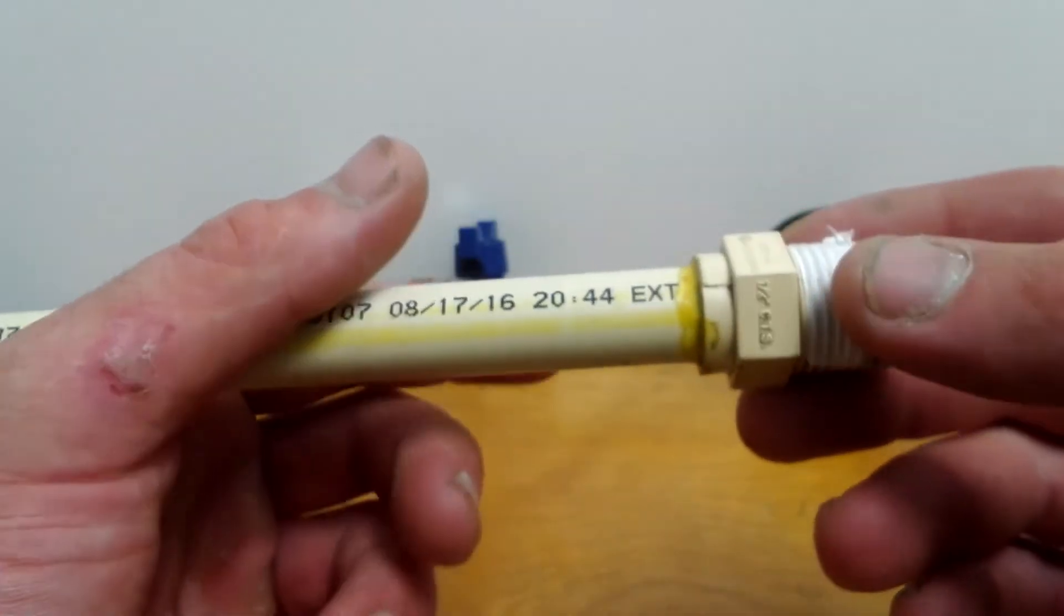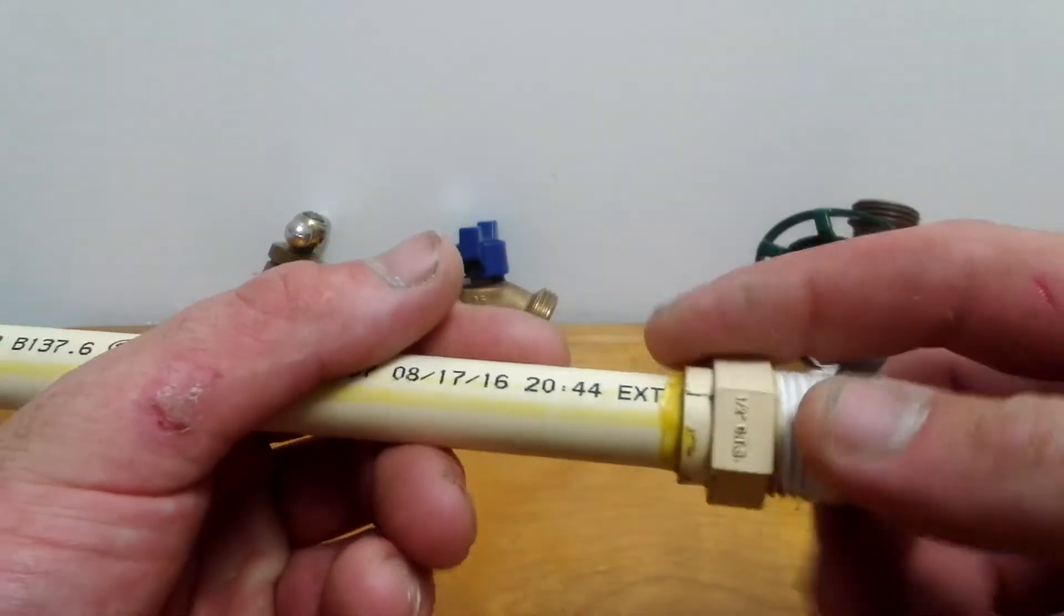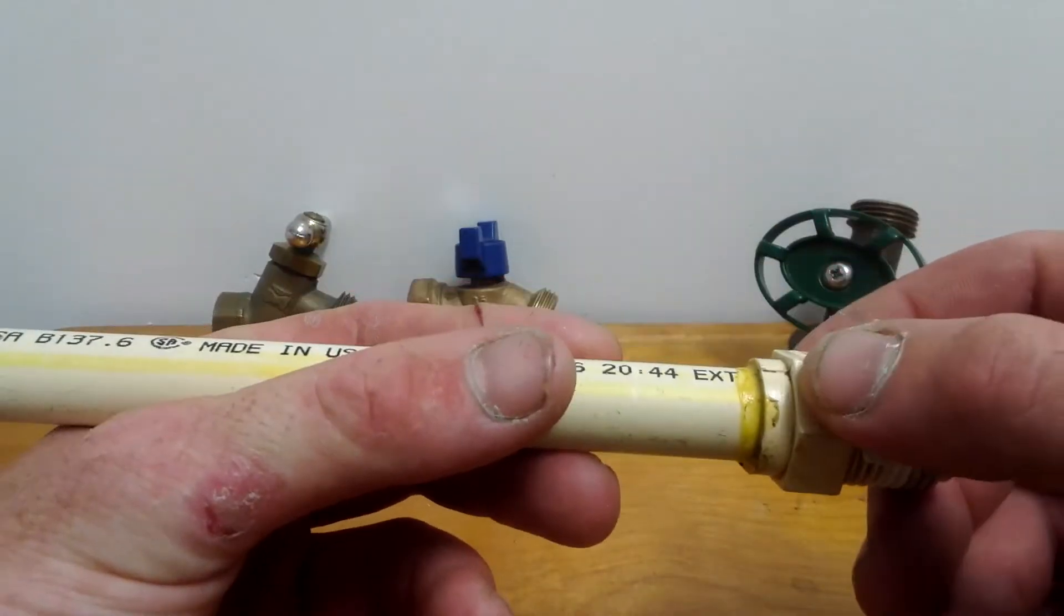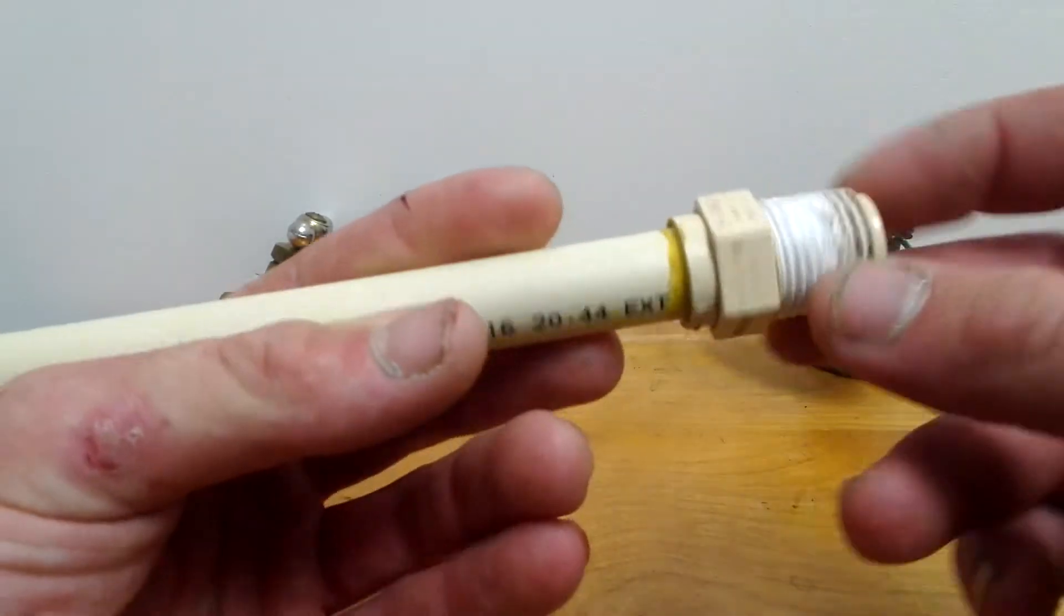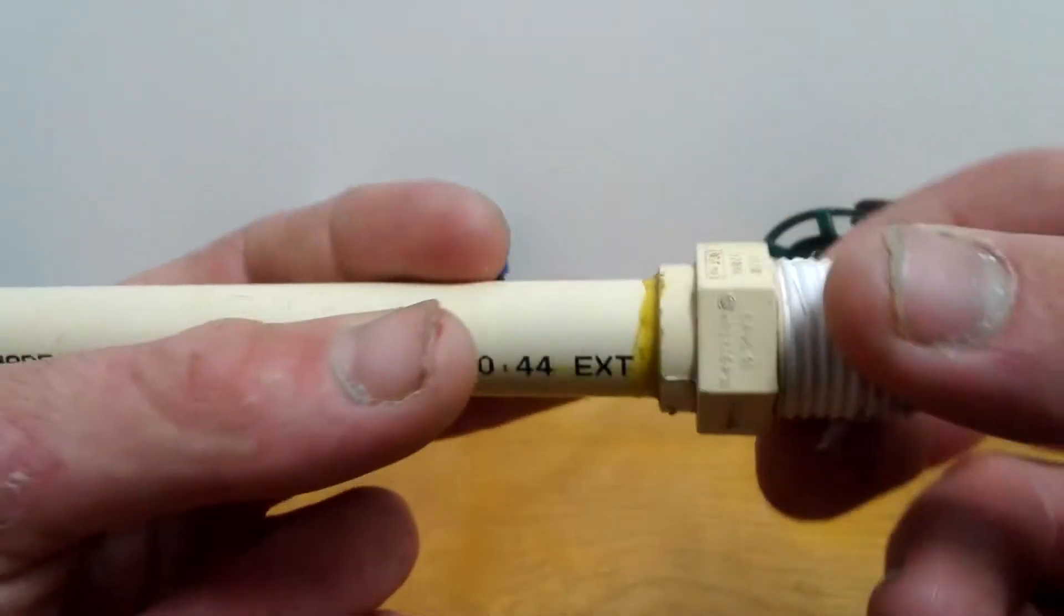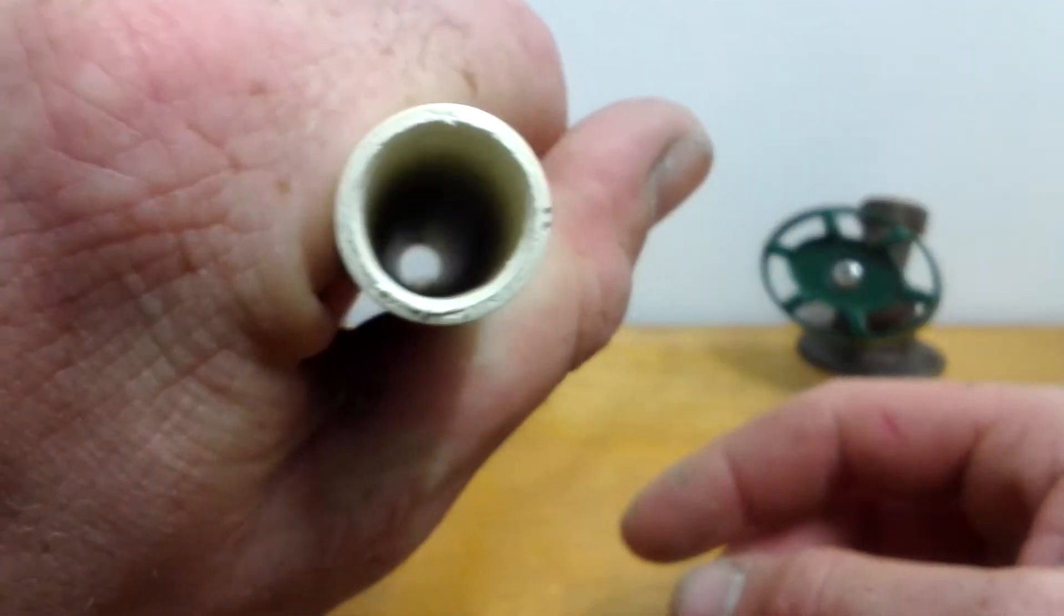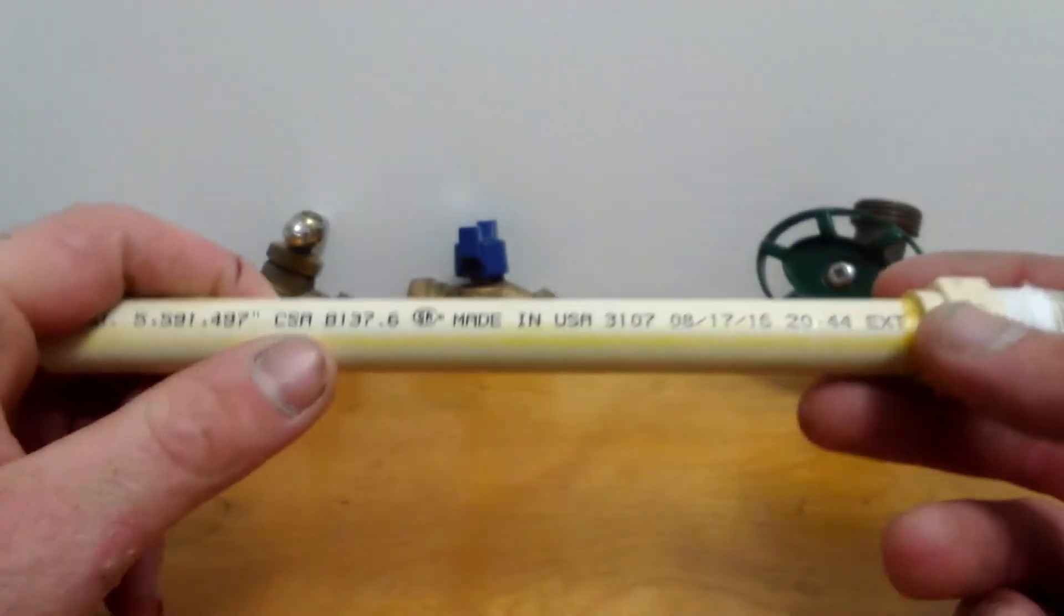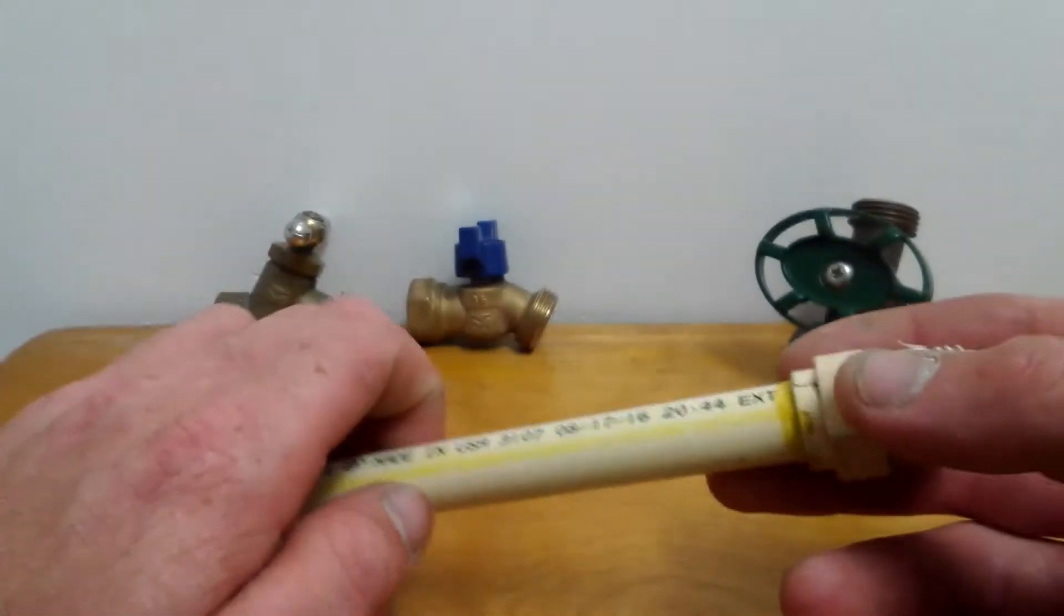Now in another video I will demonstrate how to properly glue these together. This is a threaded male adapter and you can see the inside of the pipe and it's yellow to let you know it's CPVC.